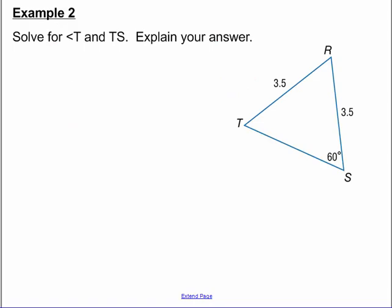Solve for angle T and side TS. Explain your answer. Well, notice this picture, and make sure you have this drawn in your notes, that RT is congruent to RS. That tells me, then, the base angles are equal, so angle S is congruent to angle T. So I can say angle T is equal to 60 degrees by our isosceles triangle theorem.